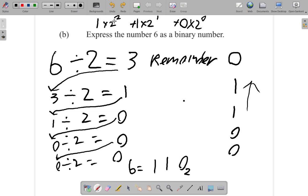Two squared is 4, that means 2 squared is 4, 4 times 1 is 4. Plus 2 to the power of 1 is 2, 2 times 1 is 2. Plus 2 to the 0 is 1, 1 times 0 is 0.